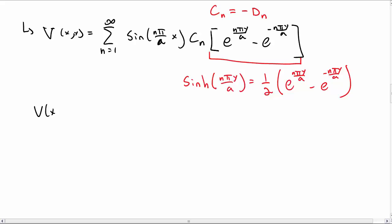So let's rewrite our solution now in a slightly more compact way. We have a sum from n equal 1 to infinity sin(n pi over a x) C_n twiddle sinh(n pi y over a), where C_n twiddle now includes maybe a factor of 2.